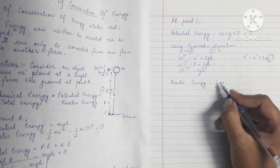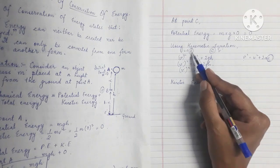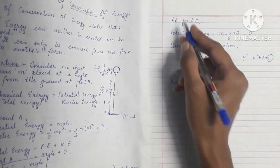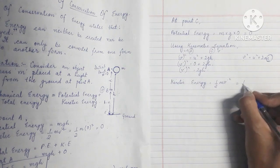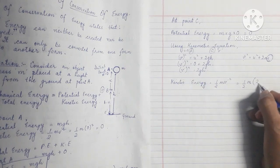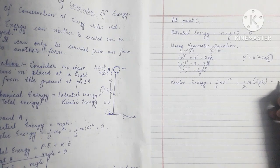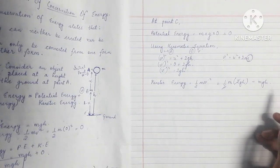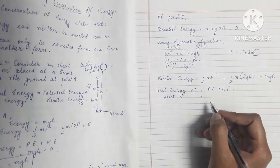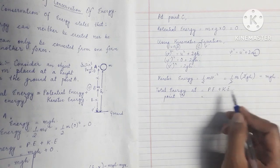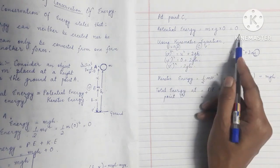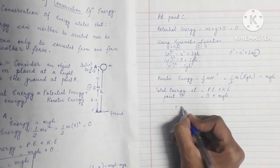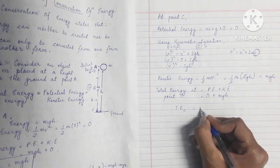Kinetic energy at C = ½mv'² = ½m(2gH) = mgH. So total energy at point C = Potential energy + Kinetic energy = 0 + mgH = mgH.